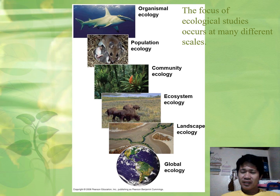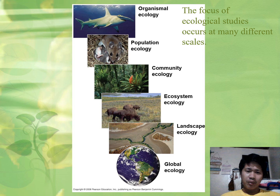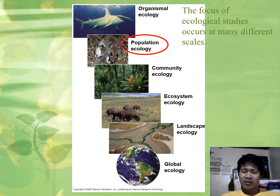There are many approaches in ecological studies. It really depends on the scale of your study. For example, if you focus on the organism itself, then that's organismal ecology. Population ecology is when you focus on a single population of a species. Then there's community ecology, ecosystem ecology, landscape ecology, and global ecology — covering all organisms in the biosphere. We are now focusing on population ecology.